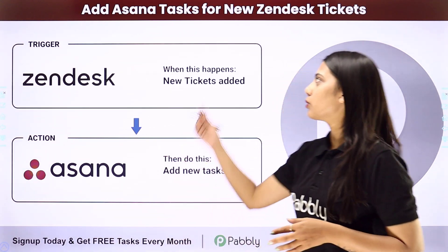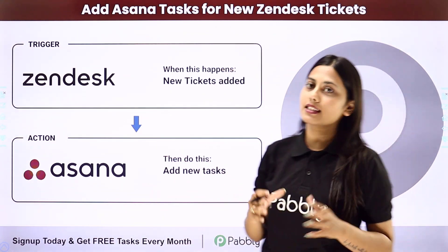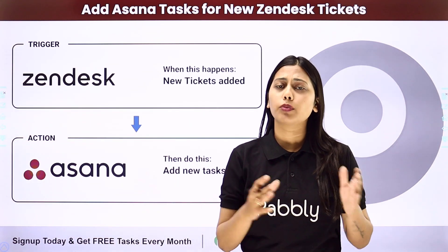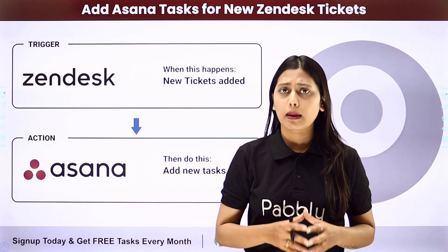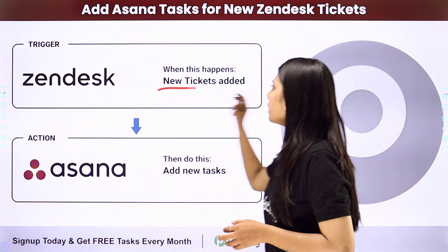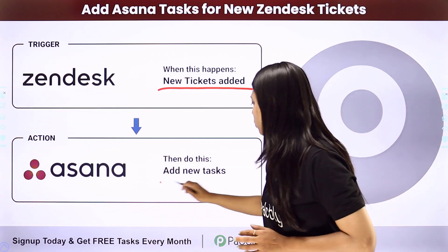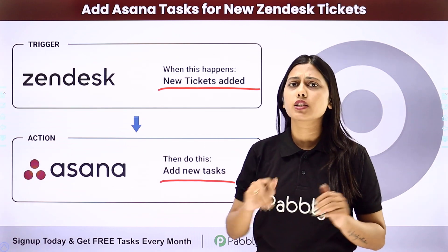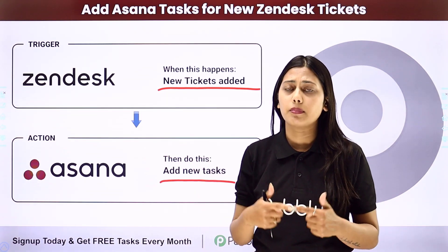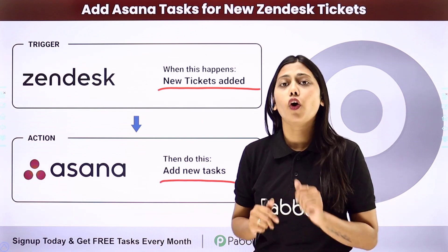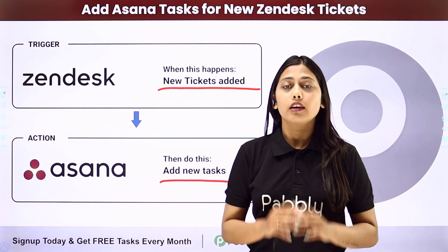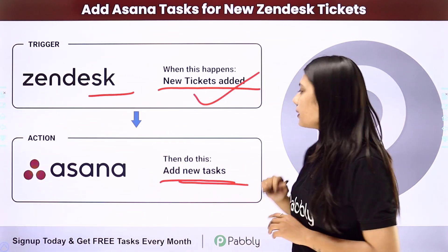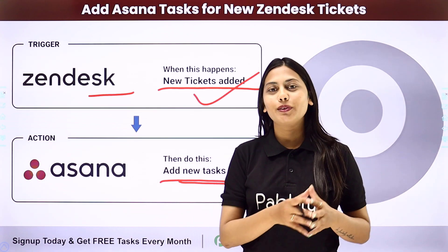Hello everyone. Today we will learn how to add an Asana task for new Zendesk tickets. Zendesk is a CRM application and Asana is used for project planning and project management. If you use Zendesk as a CRM application, you want that every time a new ticket is raised in your account, a new task should be added for that ticket in Asana. We can automate this whole process with the help of Pabbly Connect, where our trigger will be a new ticket added in Zendesk and our action will be a new task added in Asana. Let us learn how to do it.